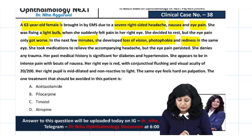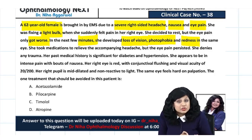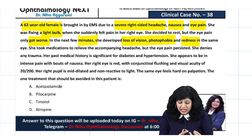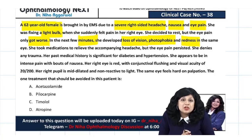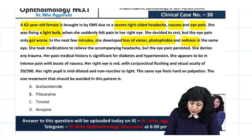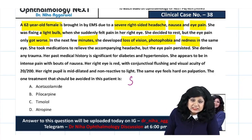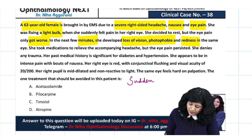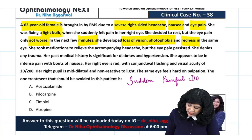Along with the right-sided headache, nausea, and eye pain, she is also developing loss of vision. So we can say this patient is having a sudden painful diminution of vision.